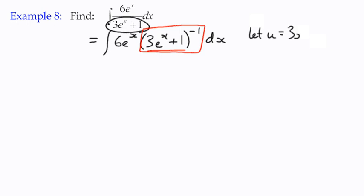So we can go ahead and say let u equal the inside function, 3e^x + 1. So du/dx is the derivative of 3e^x, which is just 3e^x. Multiply through by dx.